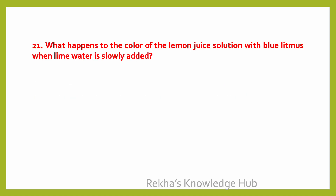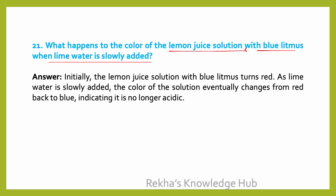What happens to the color of a lemon juice solution with blue litmus when lime water is slowly added? Initially, the lemon juice solution with blue litmus turns red. As lime water is slowly added, the color of the solution eventually changes from red back to blue, indicating it is no longer acidic.